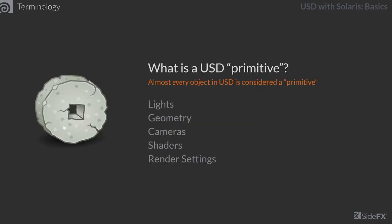Let's talk about what a primitive is in USD. Almost every object is considered a primitive, whether it's a light, geometry, a camera, shaders, or render settings. A primitive is simply a way of saying 'this is a thing in USD.' These are all the things we're going to author, manipulate, and edit throughout the process of creating a USD scene. So any preconceived notions you might have of the word 'primitive,' let's set those aside as we move forward.